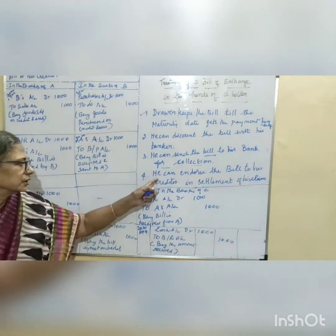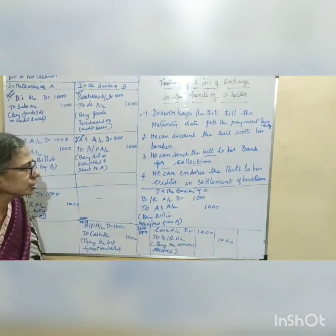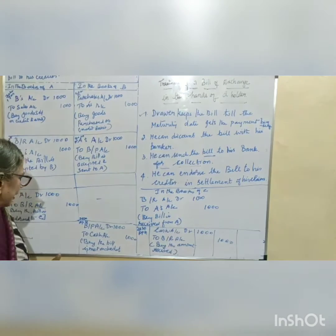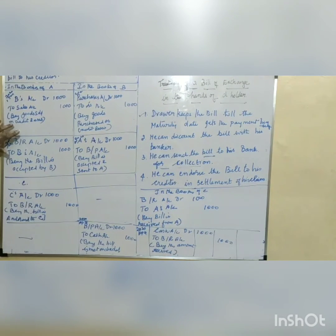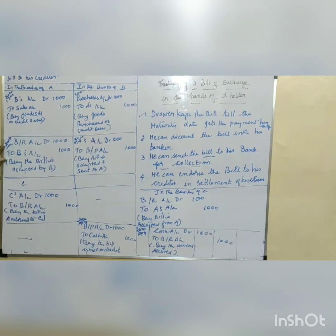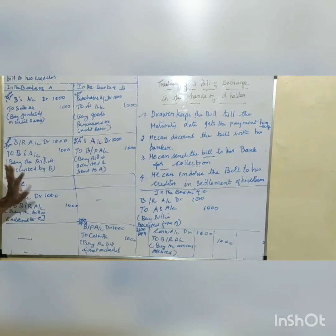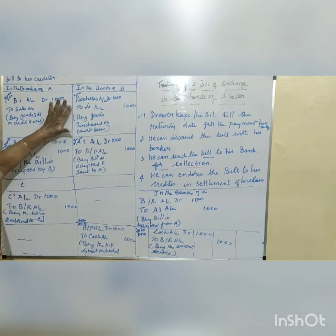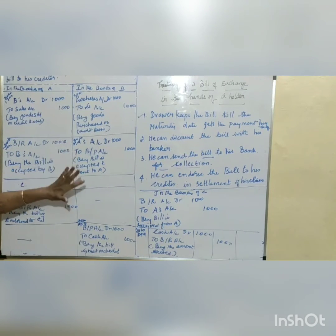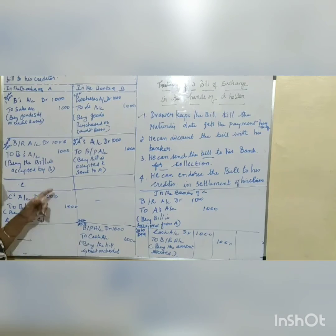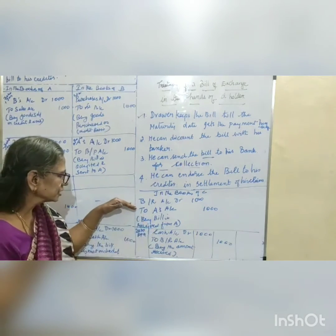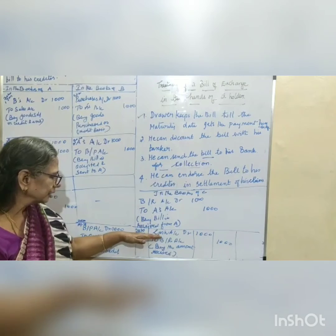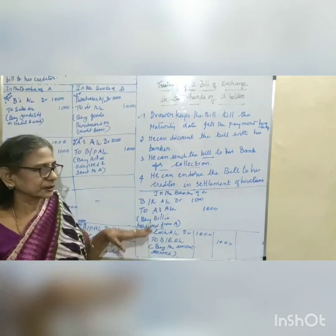This is condition under the fourth category: he can endorse the bill to his creditor in settlement of his claim. In the books of A: the first entry is sale proceeds, next is making of the bill, third is endorsing the bill in favor of his creditor — transaction over. In the books of B: credit purchases, acceptance of the bill, and after three months, paying the bill. In the books of C: bills receivable account debited to A's account, and after the third month, cash account debited to bills receivable account — transaction complete.